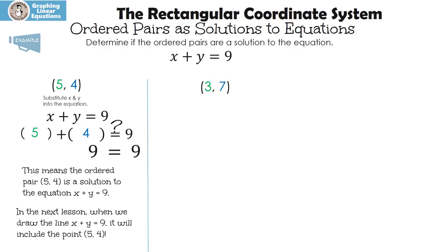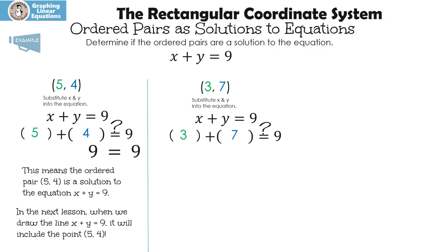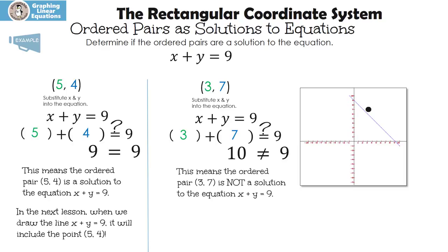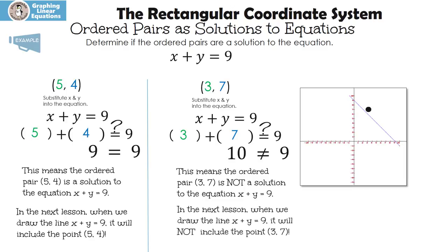Let's look at the ordered pair three, seven. Once again, we're going to substitute three in for x and seven in for y. I put parentheses where my variables were, with a question mark above the equal sign. Three goes in for my x, seven goes in for my y. Three plus seven is ten, and ten does not equal nine. This means the ordered pair three, seven is not a solution to the equation x plus y equals nine. In the next lesson, when we draw the line x plus y equals nine, it will not include the point three, seven.